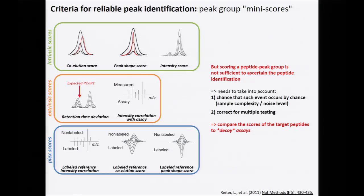The idea is to go beyond just those raw scores and account for the chance that coeluting events occur by chance. If you measure a single peptide in a water background, the chance that an interfering transition coelutes by chance is very different from measuring it in a human tryptic digest background. The chance that six transitions coelute by chance will vary considerably depending on sample complexity. A very important consideration is correction for multiple testing — if you measure one peptide versus 10,000 peptides, you need to correct the false discovery rate accordingly.